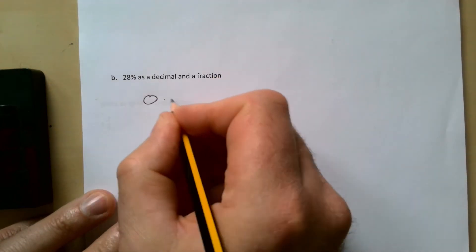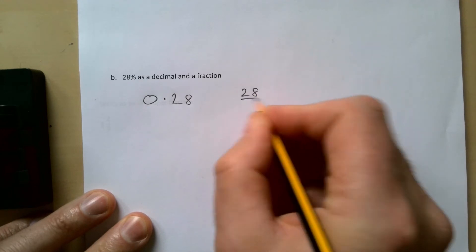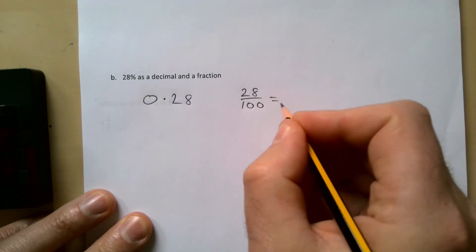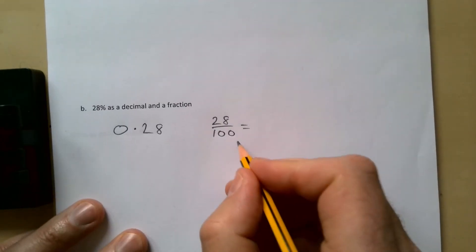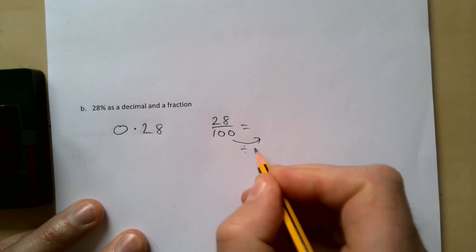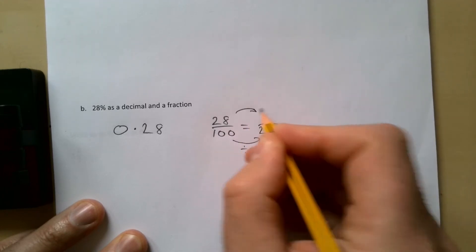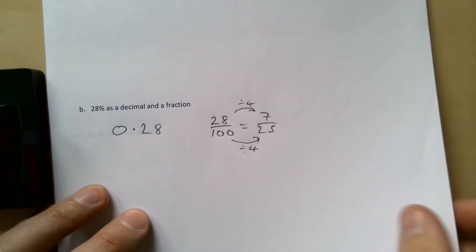28% as a decimal and a fraction. As a decimal of course going to be 0.28. As a fraction then we're going to have 28 over 100, and they both divide by 4. Very like our equivalent fractions here where we multiply it up, we can divide both of these by 4. If I divide that by 4 I get 25, if I divide this by 4 I get 7, so seven twenty-fifths is our fraction.